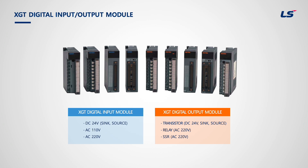Output modules are divided into transistor type, relay type, and SSR type, which is solid state relay. The transistor output module needs DC 24 voltage and has sink type and source type. Relay and SSR type receive AC power.